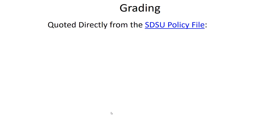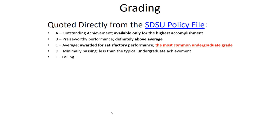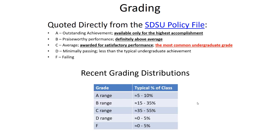In terms of grading in this class, I follow directly the SDSU policy file. A letter grade of A stands for outstanding achievement — available only for the highest accomplishment. B is praiseworthy performance, definitely above average. C is average, awarded for satisfactory performance — it's the most common undergraduate grade. D is minimally passing, less than the typical undergraduate achievement, and F is failing. Notably, the most typical score earned by students is a C. Less common is a B, and least common of all is an A.